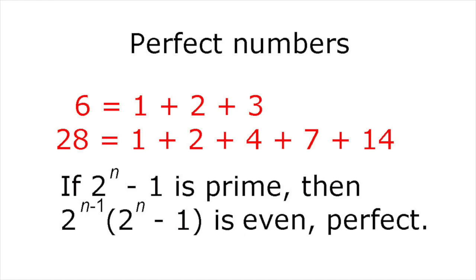In about 300 BC, Euclid proved that whenever 2 to the n minus 1 is prime, where n itself is prime, in other words, for every Mersenne prime, 2 to the n minus 1 times 2 to the n minus 1 is an even perfect number.